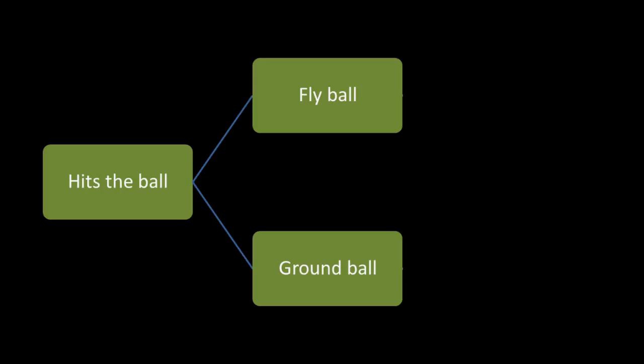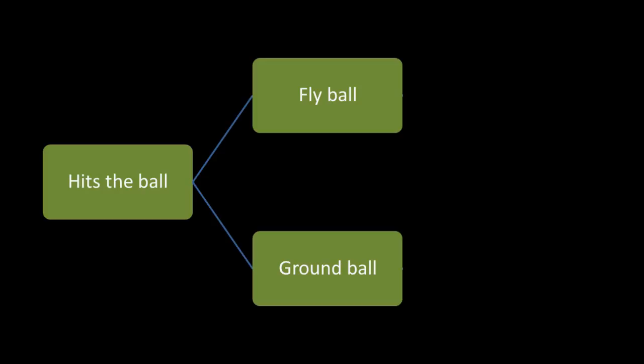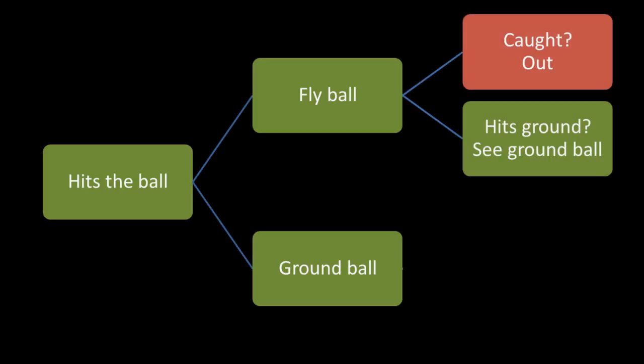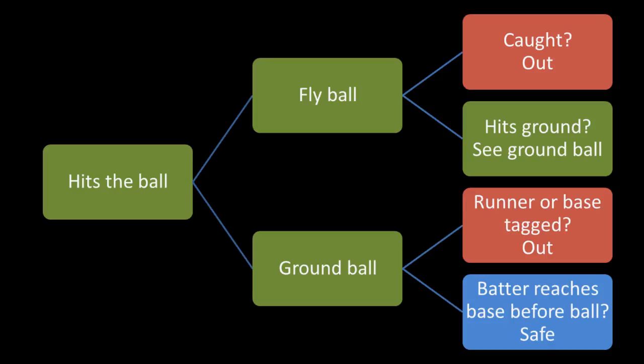To recap the most common ways to be put out: three strikes is an out, as long as the final strike is called or swung at and missed and the catcher catches the ball. If the ball is hit into the air, it is called a fly ball, and if a fly ball is caught before it hits the ground, it is an out. If a fly ball touches the ground, it becomes a ground ball, and the defense can either tag the batter or touch first base before the batter can touch it himself. If the defense can do this, the batter is out. If the batter gets to first base before the defense can tag him or the base, he becomes a base runner and the next batter comes to the plate.